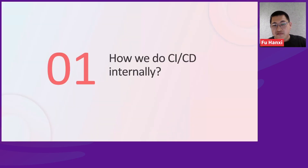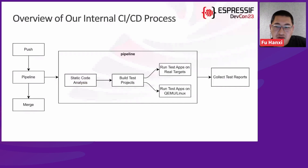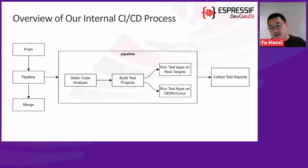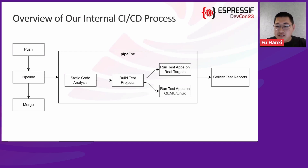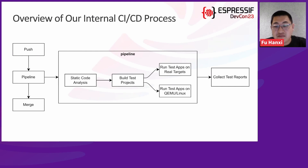This is the first part: how we do CI/CD internally. This graph is a high-level overview of our internal process — what a common CI/CD process does. Every time our developers push a commit, a pipeline including static code analysis, build jobs, and test jobs will be triggered. If the pipeline passes, the commit will be merged into our main branch. We also have an extra stage to collect test reports and monitor how test cases run across various maintained versions of ESP-IDF, which helps us improve test coverage in future development.